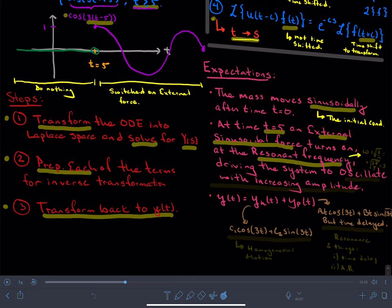That resonant frequency is omega equals the square root of k over m, which is equal to 27 divided by 3 under a square root, which is 3.